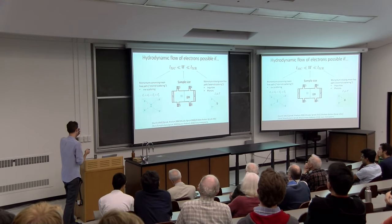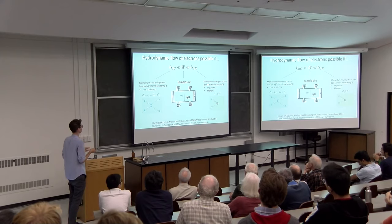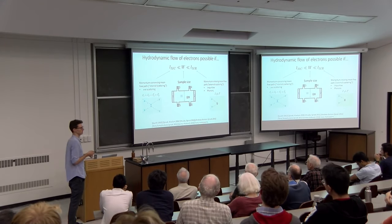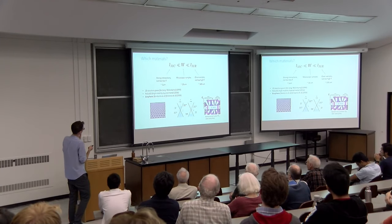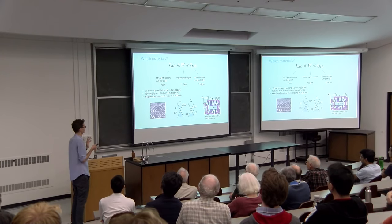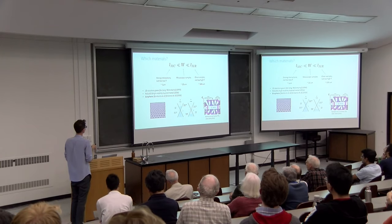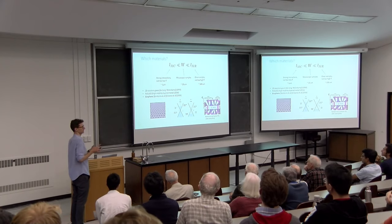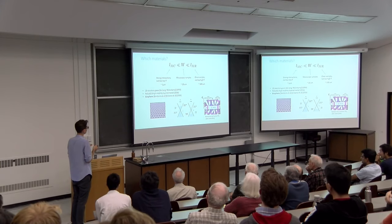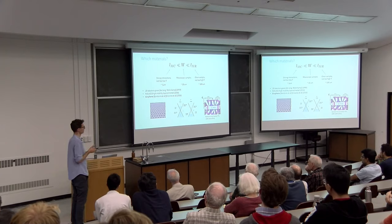This idea actually dates back to Gurzhi in 1963 and has been revisited by theorists several times since, but recent interest arose due to very recent experiments in graphene. In terms of numbers: to make L_MR big, you want very clean samples and not too high a temperature, since too many phonons will decrease L_MR. To make L_MC very small, you want strong interactions between electrons. You also don't want too low a temperature because of Pauli blocking — in a Fermi liquid at low temperature, the mean free path for internal scattering gets very large.